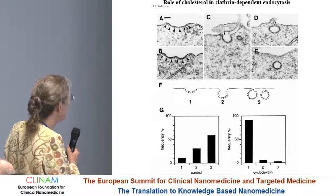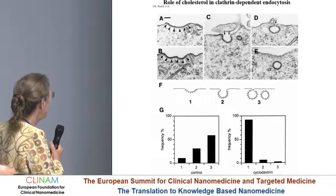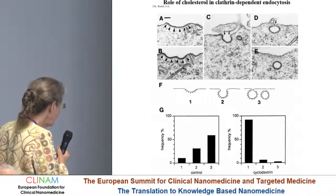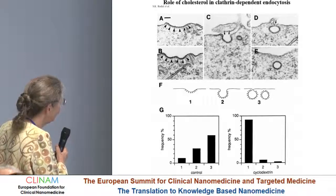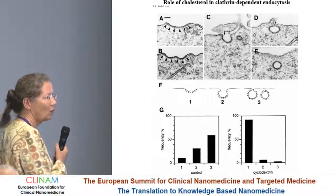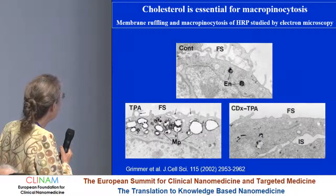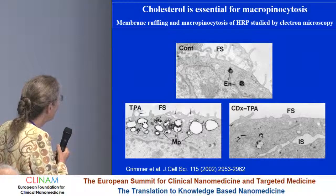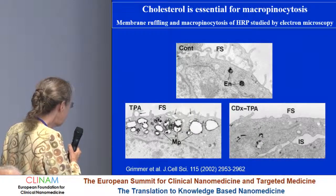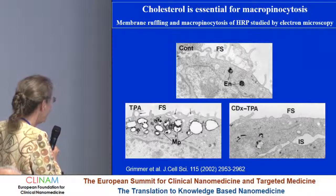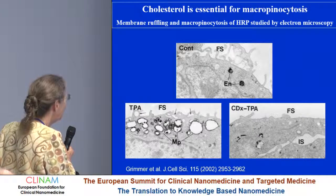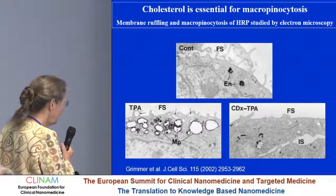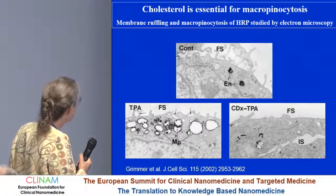Cholesterol is also important for clathrin-dependent endocytosis. When you look at clathrin-coated pits, you can have quite flat ones, more invaginated, or almost pinched off — divided into groups one, two, and three. When you add cyclodextrin to extract cholesterol, you get much more flat-coated pits, so you really affect that pathway. Cholesterol is also essential for macropinocytosis. In a control cell you see a little HRP uptake; if you stimulate macropinocytosis by adding the phorbol ester TPA, you see big vesicles. But if you first extract a little cholesterol before adding TPA, the cell can no longer macropinocytose. So one has to be careful.